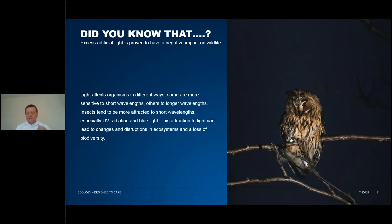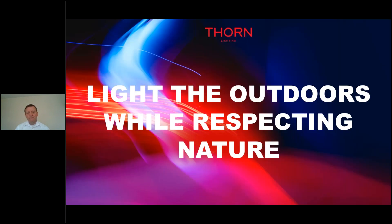Short wavelengths and long wavelengths have different effects on different animals, plants, and ecosystems. On the whole, we try to avoid shorter wavelengths — the blue end of the spectrum — because that's generally the most harmful area. We have to be able to light the outdoors; people want light to make them feel safe. But we have to do it in a respectful way. We have to respect nature. We have to respect the planet.